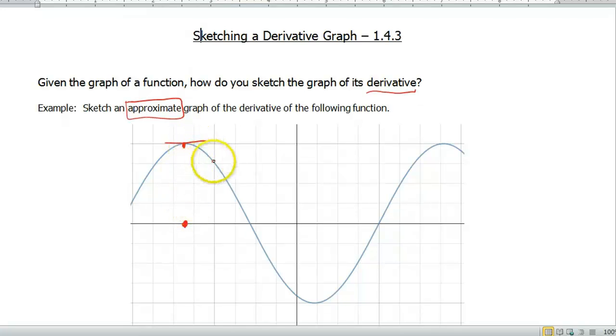Okay, now our function's gonna be decreasing until we get about to, I'd say about that point right there. And again, that's gonna represent a zero on the derivative. And then we're increasing until we get to about right here. And again, we'd have another horizontal tangent. So that's gonna represent then a zero on this graph.